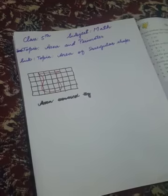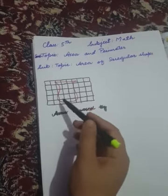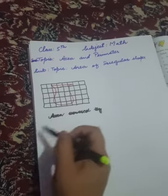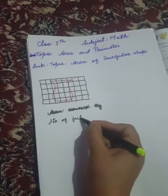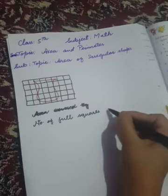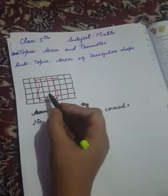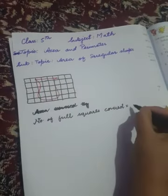So how can we find the area? Let's see the example. Here is a figure and we have to find out its area. First, what we have to do is count how many full squares are covered. Number of full squares covered: one, two, three, four, five, six, seven.